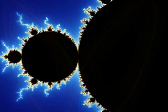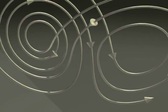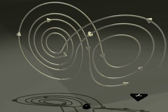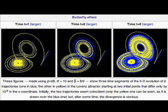Really any kind of fractal demonstrates this. This sensitivity is called the butterfly effect, demonstrated here from the Wikipedia entry on the Lorenz attractor. The yellow and blue points start very close together, but end up tracing entirely different paths.